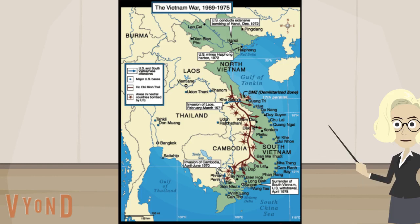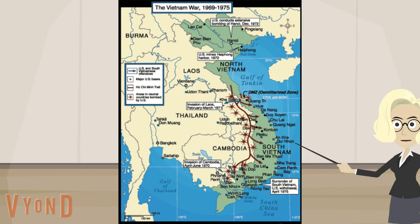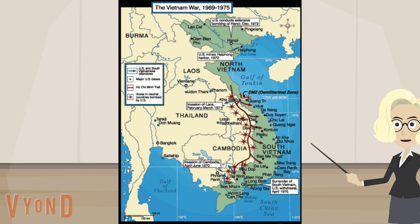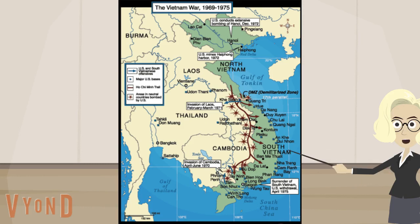Let's push ourselves to see more. I see that Vietnam was broken into North and South Vietnam, so that tells me that this was a civil war. I wonder how the U.S. got involved — and what side did the U.S. support?